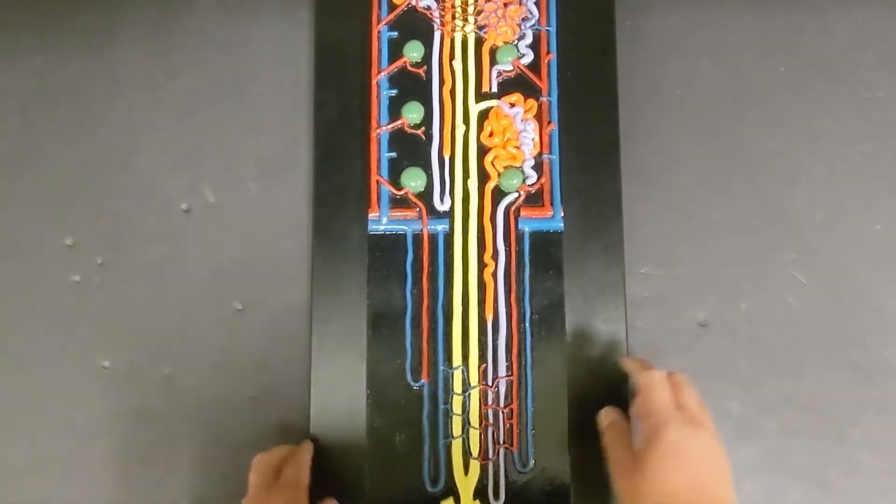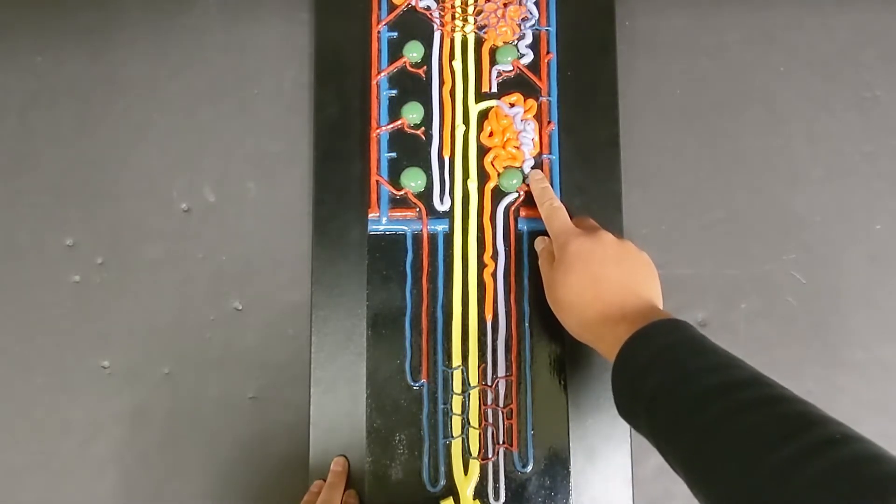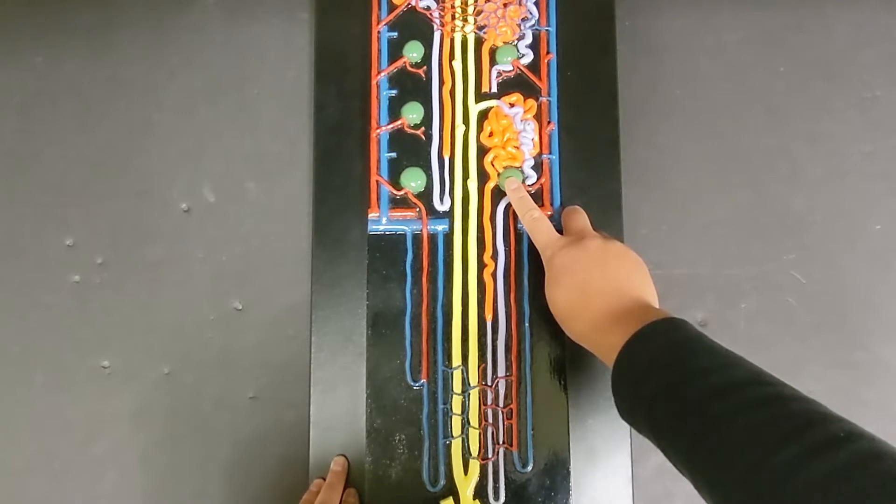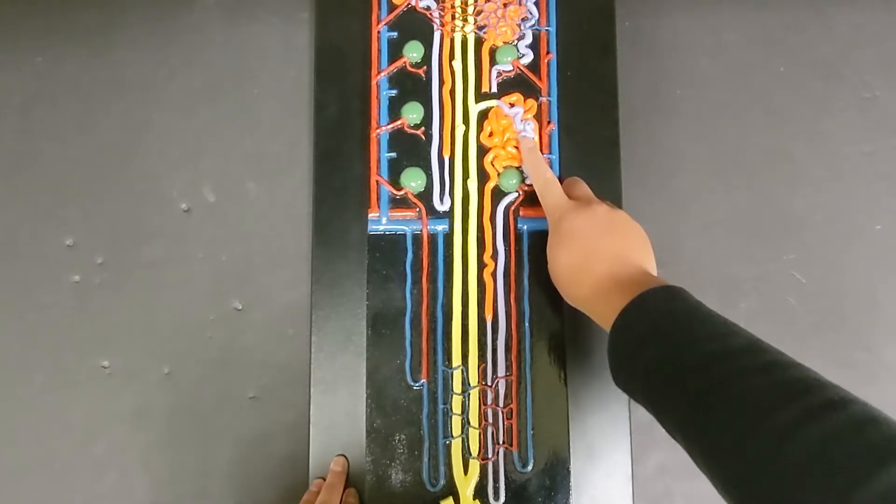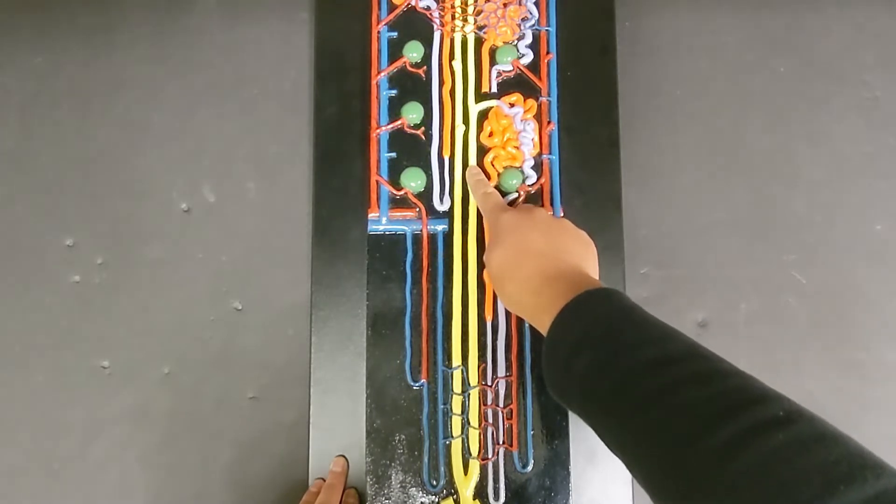Furthermore, if you look at the ascending limb of the loop of Henle, you can see that it is attached to a different tube. This tube is called the distal convoluted tubule. This one specifically is not connected to the Bowman's capsule, and instead, if you follow it, it is going to connect to this other tube, which is called the collecting duct.